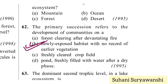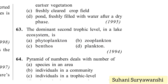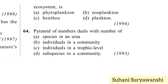The dominant second trophic level in a lake ecosystem is zooplankton. The first trophic level is occupied by phytoplankton. Pyramid of numbers deals with the number of individuals in a trophic level. So option C is the right answer.